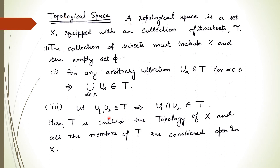An important point is that all members of this topology are considered to be open sets — they are open in X. Since we know the whole set and the empty set are open, and if U-alphas are open, their arbitrary union is also open, and finite intersection is also open, each member of this collection is an open set. So every member of the topology is an open set.